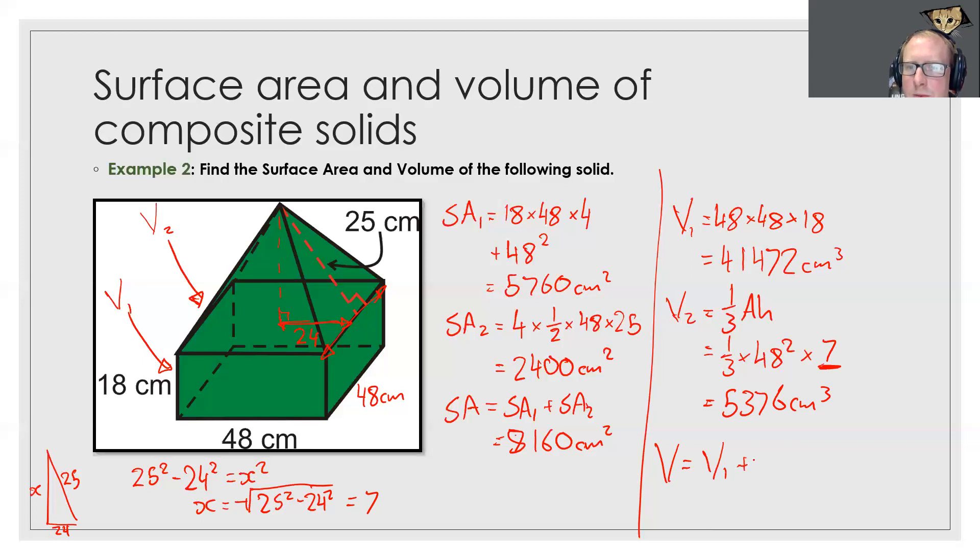So I'm going to go ahead and do that now and we get our final answer of 46,848 centimeters cubed. There we go, the volume and the surface area of composite shapes. Thanks guys.